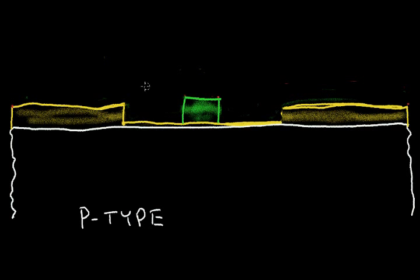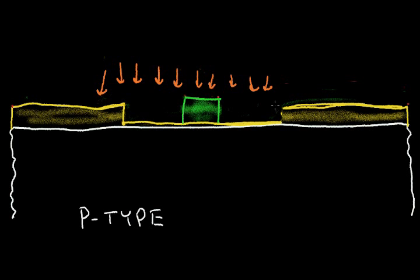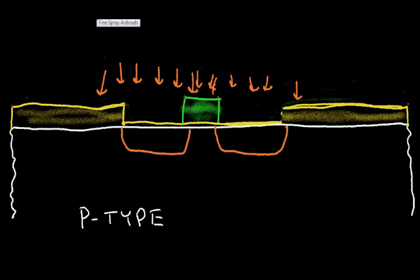Now let's do another fabrication step. I want to implant — by shooting in N-type material — over the surface of this wafer. The thick glass region will block the N-type implant, and it will also be blocked by the green polysilicon. So the N-type material will form the NMOS transistor source and drain regions. This N-type silicon is actually put in after the gate is formed.